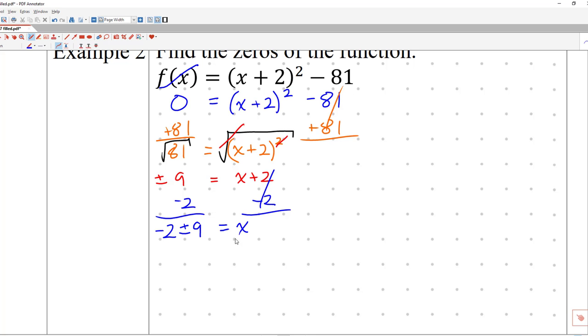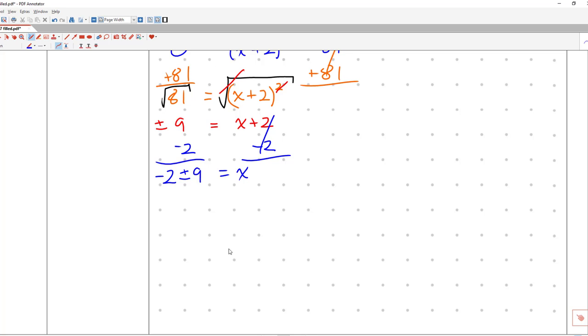And then for Khan Academy, we have to figure out what are those two different values. So let's do the plus first. Negative 2 plus 9 is 7, so x = 7 is one of the answers. And x is equal to negative 2 minus 9, which is the same thing as negative 2 plus negative 9, which is negative 11.